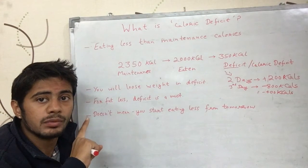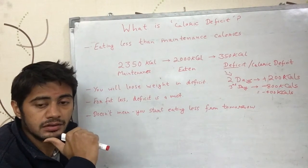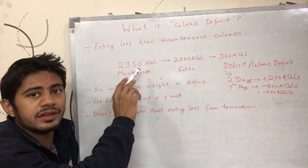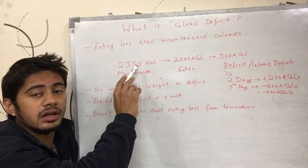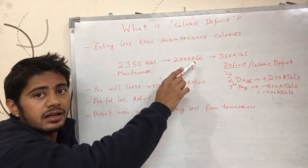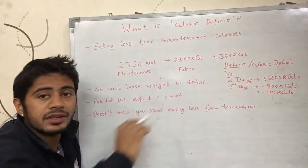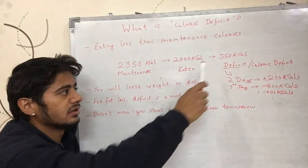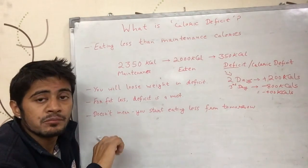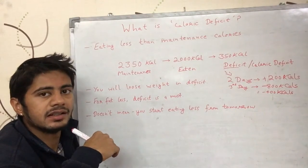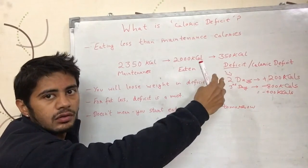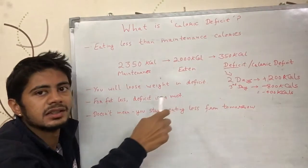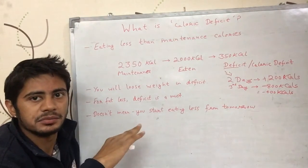I have talked about what maintenance calories are in my previous video. For example, my maintenance is at 2350 calories and I ate 2000 calories. Then I have created a deficit of 350 calories. That is called caloric deficit. I have created a deficit of 350 calories, or I have created a calorie deficit of 350 calories — deficit or caloric deficit are the same thing.